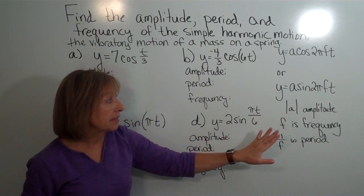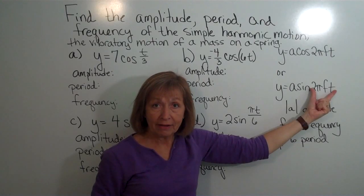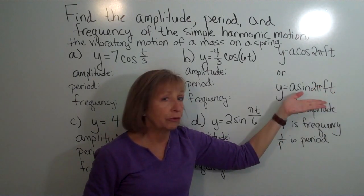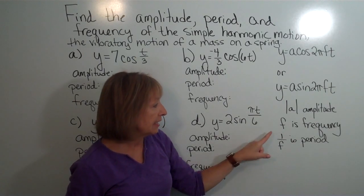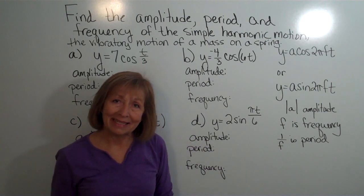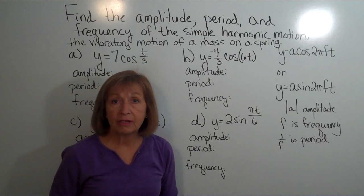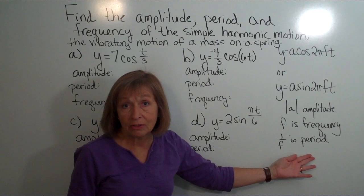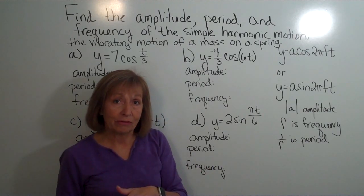f is the frequency. When we look at the cosine or sine acting on two pi f t, that two pi f t gives us the coefficient in front of the angle t, which is a real-valued quantity over time. The reciprocal of the frequency — 1 divided by the frequency — is your period. Whether you get the period first and then reciprocal it for frequency, or get the frequency first and then reciprocal it for the period, you'll arrive at the correct answer either way.